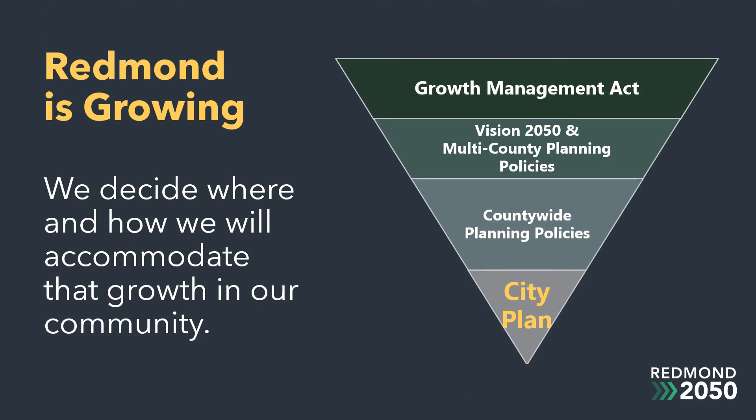The city prepared an environmental impact study and a draft EIS because Redmond is growing. Washington State intentionally sets some areas aside for growth in housing and jobs — this is the urban growth area — and other areas for preservation of agriculture and natural resources. The EIS will help us make decisions on where we grow and what it will look like, including things such as building heights, different types of housing, and more.